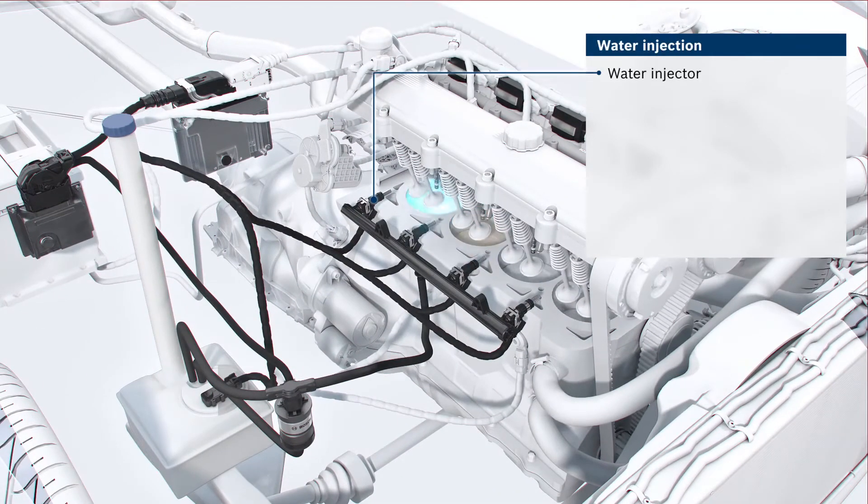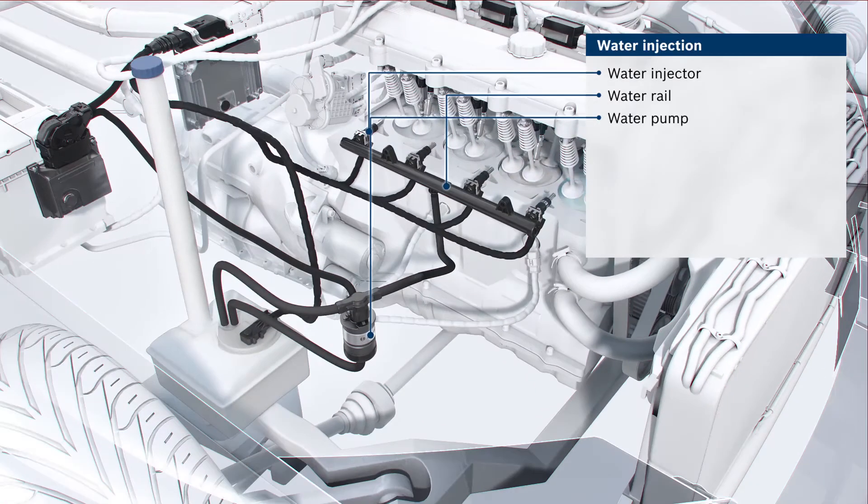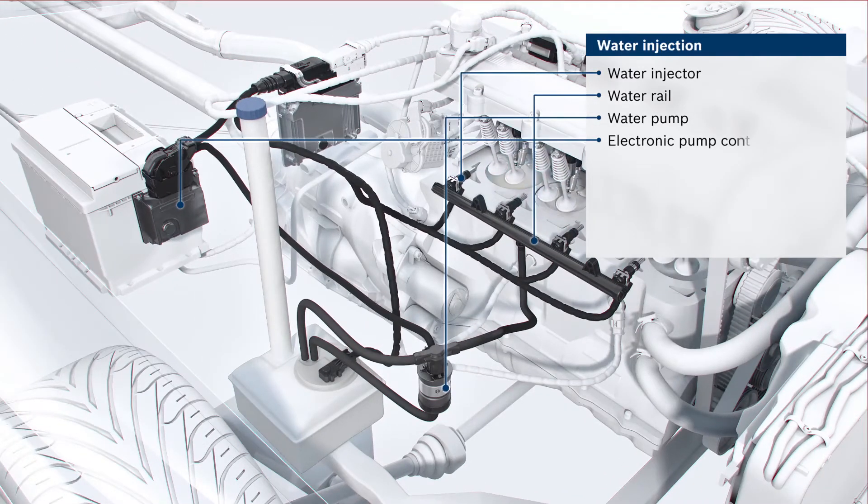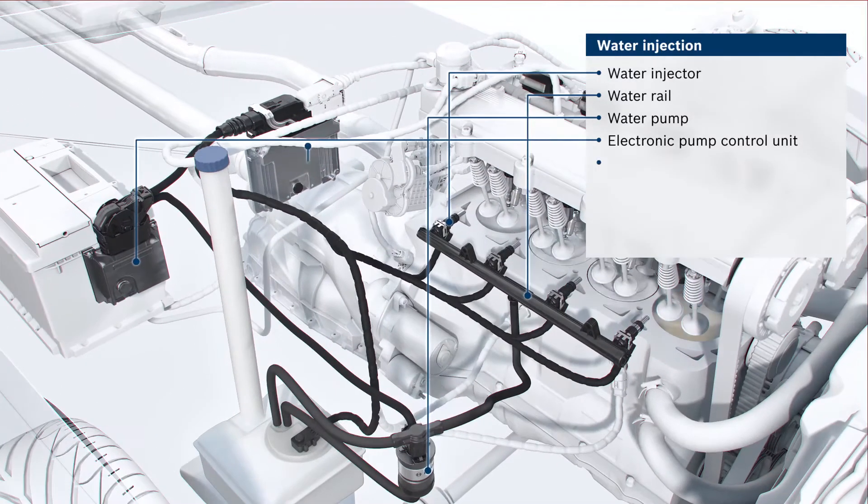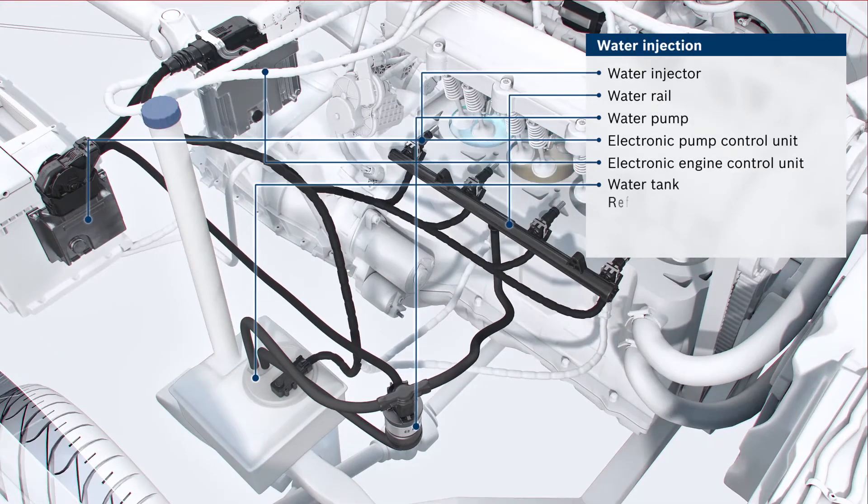Besides the water injector and the water rail, the system contains further components: a water pump, an electronic pump controller, an electronic engine control unit for the entire system, and a water tank.